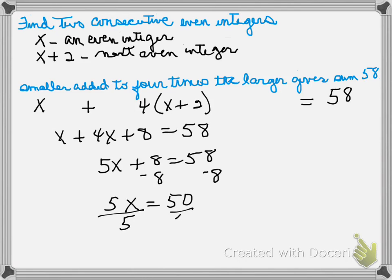Continuing to solve for X, we divide by 5, the coefficient of X, and X equals 10. First ask yourself: is the answer even? Yes, 10 is an even number. So the next even number, X plus 2, would be 10 plus 2, or 12.